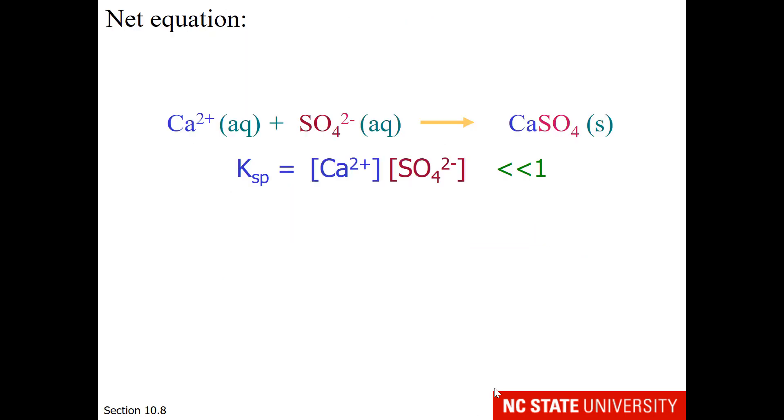So the Ksp of calcium sulfate is a small value of less than 1, and this is our net precipitation reaction.